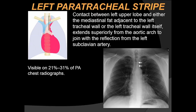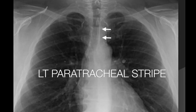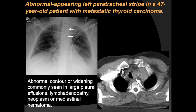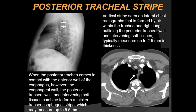The left paratracheal stripe is formed by contact between the left upper lobe and either the mediastinal fat adjacent to the left tracheal wall or the left tracheal wall itself. It extends superiorly from the aortic arch to join the reflection from the left subclavian artery, and is visible in about 20 to 30 percent of frontal radiographs. Here the left paratracheal stripe appears thickened and the trachea is displaced to the right — this is metastatic thyroid cancer with a large supraclavicular lymph node displacing the trachea.